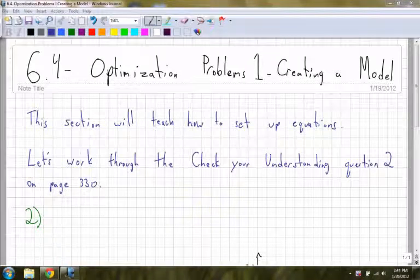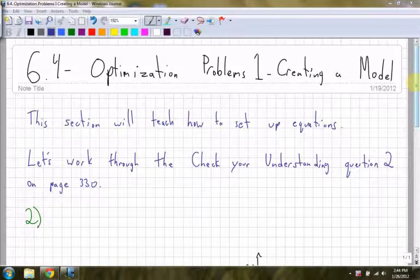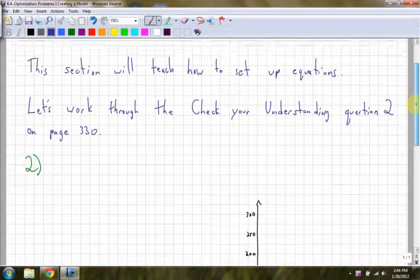6.4, optimization problems 1, creating a model. This section will basically show you how to set up the equations and graph them. In the next section what you'll be doing is actually optimizing, figuring out what the values are. So because we're just basically setting them up and most of them work the same way, I'm just going to work through one example.